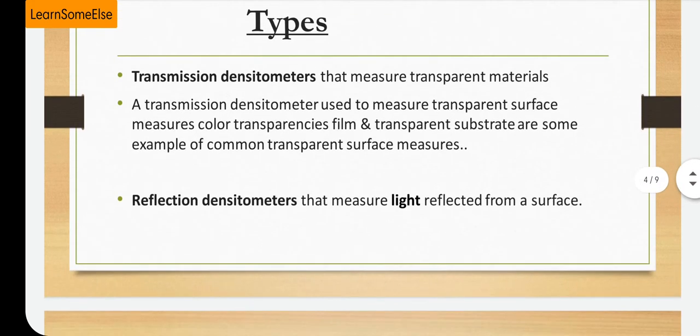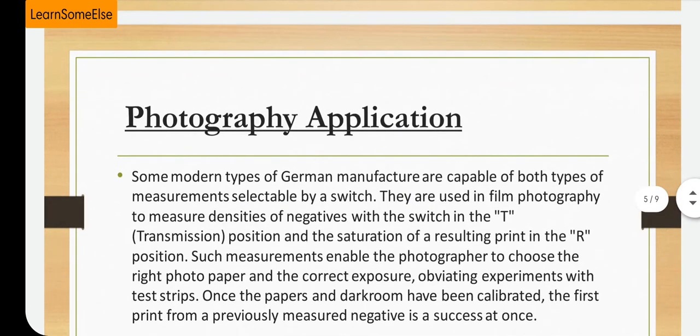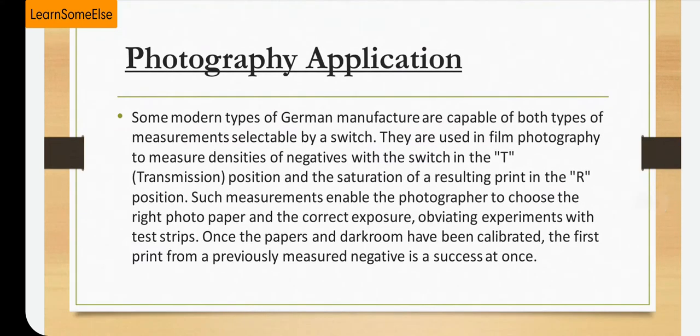Now we discuss about photographic applications of the densitometer. Some modern types from German manufacturers are capable of both types of measurements, selectable by a switch. They are used in film photography to measure densities of negatives with the switch in the T position, and saturation of the resulting print in the R position. Such measurements enable the photographer to choose the right photo paper and correct exposure.